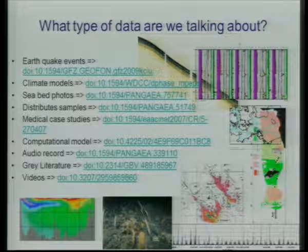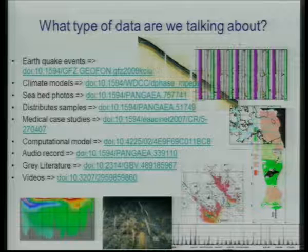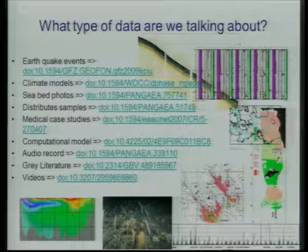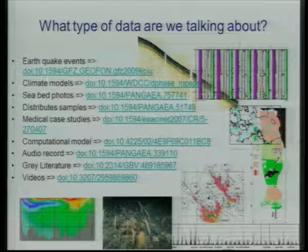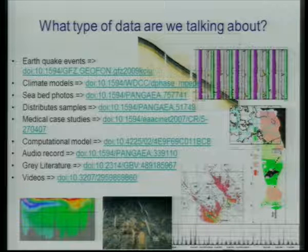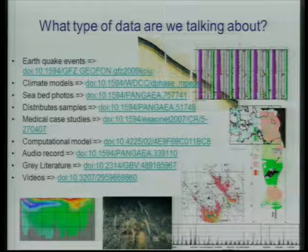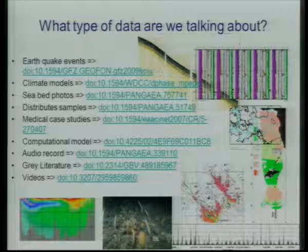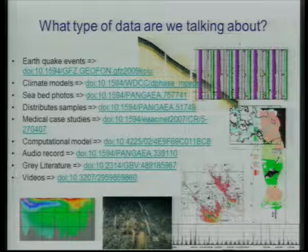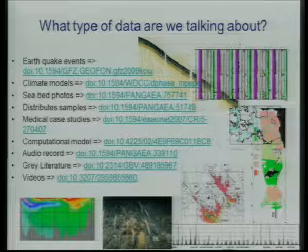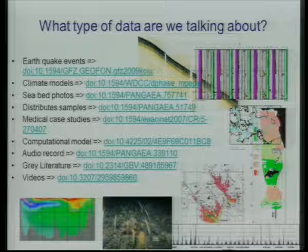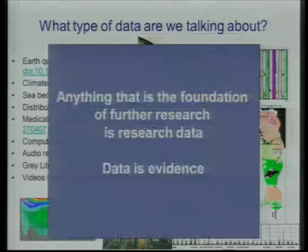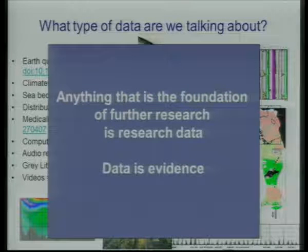What type of data are we talking about? Anything. We have a very broad definition of data. Here you have some examples. We have, for instance, a member who essentially assigns DOIs to grey literature. But the idea is that the large majority of objects should be and will be and are already data sets. In fact, data is anything that is a foundation of further research — data is evidence.